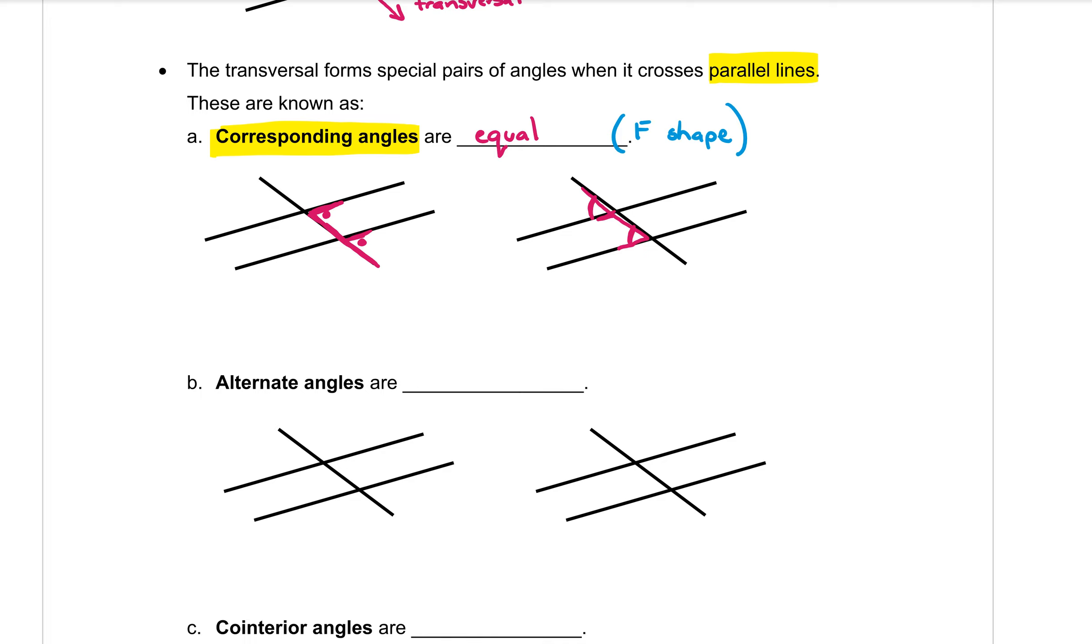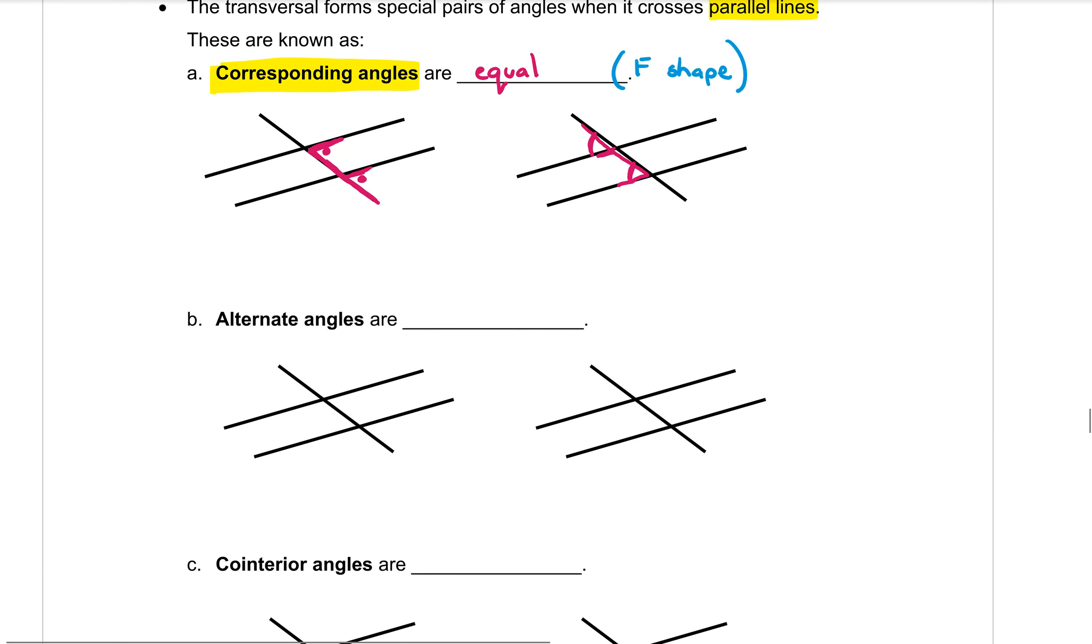Okay, the next type of angles that we need to learn about are called alternate angles. These angles are also always equal. Now they form a different shape. They form a Z shape.